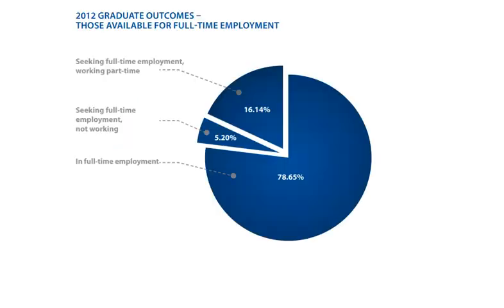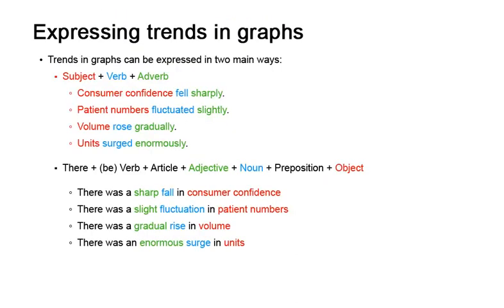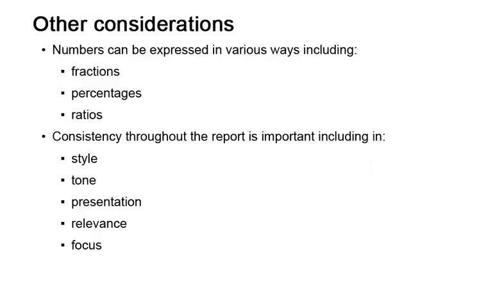Here, for example, is a pie chart from an ACU annual report that helps the reader quickly and clearly understand that the majority of ACU graduates have been successful in their hunt for full time work. When discussing trends in any graph, two basic sentence structures can be used to express these, as seen in the examples on this slide. Numbers can be expressed in many ways including as fractions, percentages and ratios.